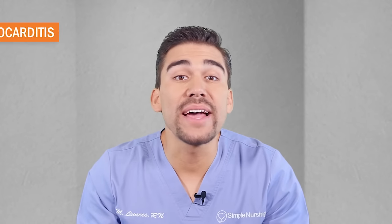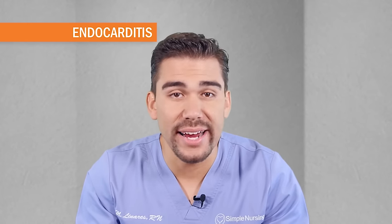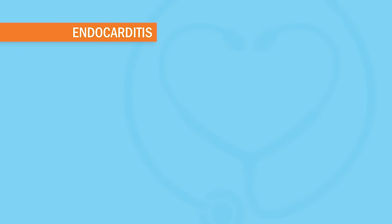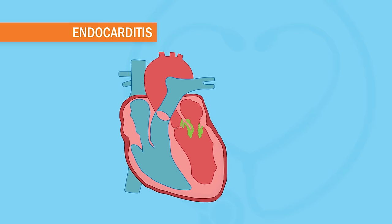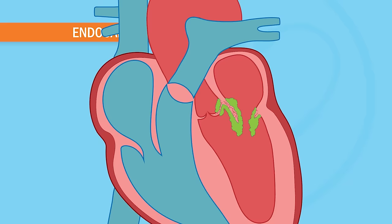Today we're wrapping up infective endocarditis — what happens when the heart starts growing mold, aka bacterial vegetation, on the valves inside the heart itself?